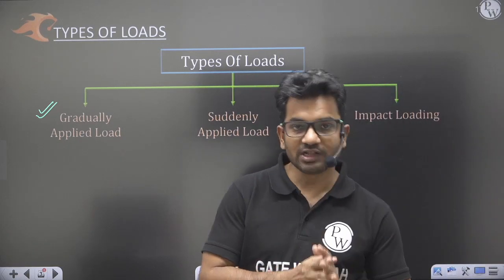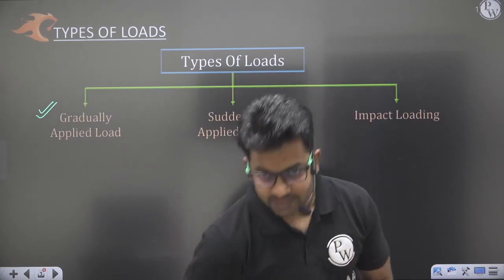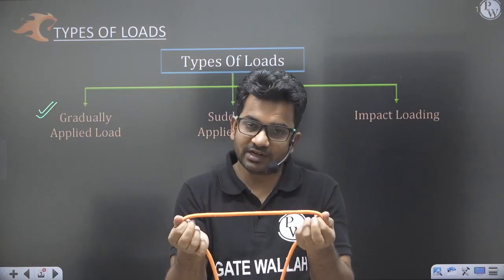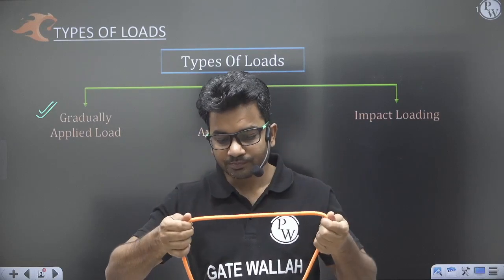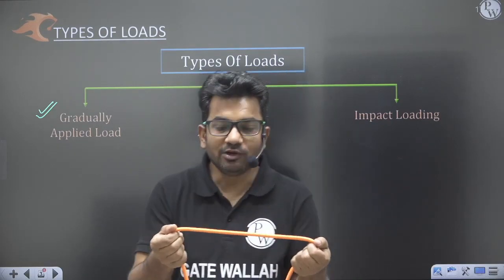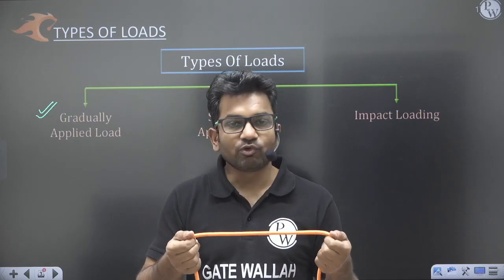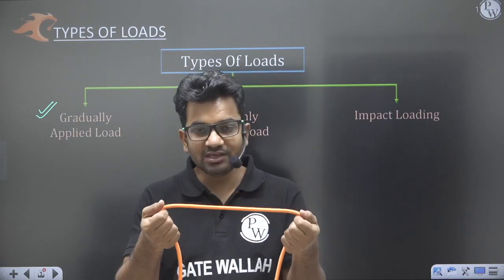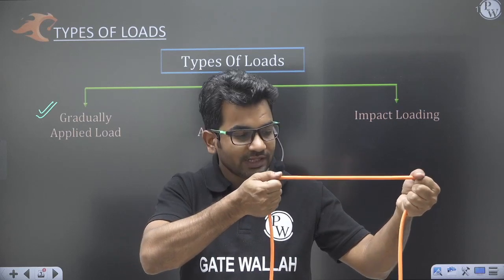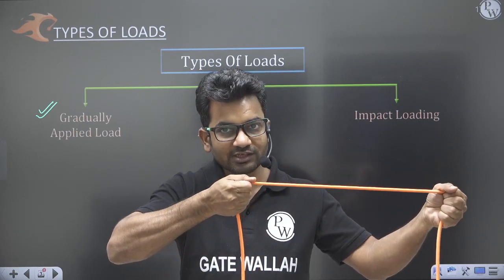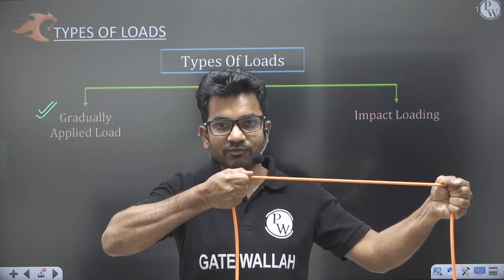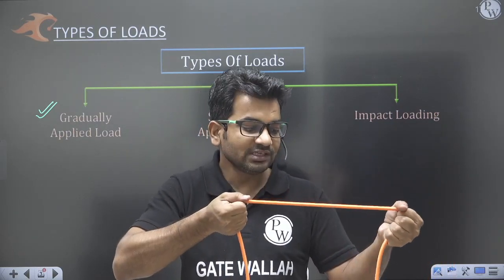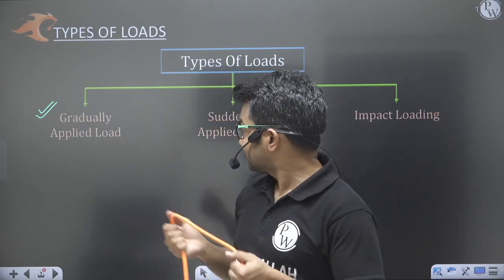Let us take an example of a stretchable rope to understand what we mean by gradually applied load, suddenly applied load, and impact load. Consider this as a steel bar. If I apply loading slowly and slowly, increasing the load gradually so the bar slowly elongates in length — that type of loading is called gradually applied load.